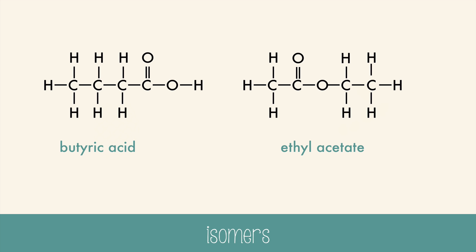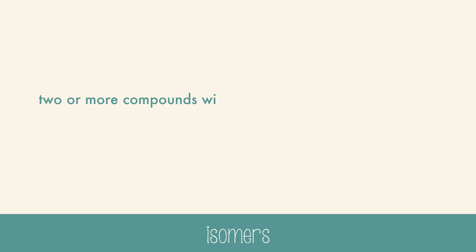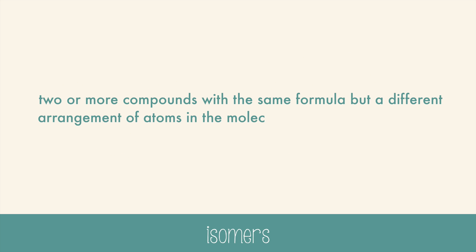Well, they're put together differently. Here are the structural formulas of ethyl acetate and butyric acid. They have the same number of carbons, hydrogens, and oxygen atoms, but they've been assembled differently. This difference accounts for the difference in their smells. These two chemicals are isomers of C4H8O2. Isomers are two or more compounds with the same formula, but a different arrangement of atoms in the molecule, and different properties.